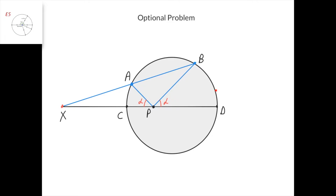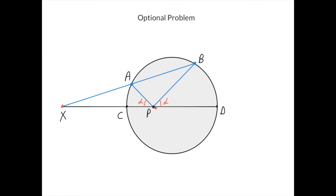Here's the optional problem. We have a circle, and CD is the diameter of that circle, so the center of the circle is the midpoint of the segment CD. The point P is chosen on the segment CD at random, and then an angle alpha is chosen. Points B and A lie on this side of the circle and are such that angles BPD and APC are equal to alpha. Then we intersect the lines BA and DC at the point X. We need to prove that the point X stays constant when we vary the angle alpha.